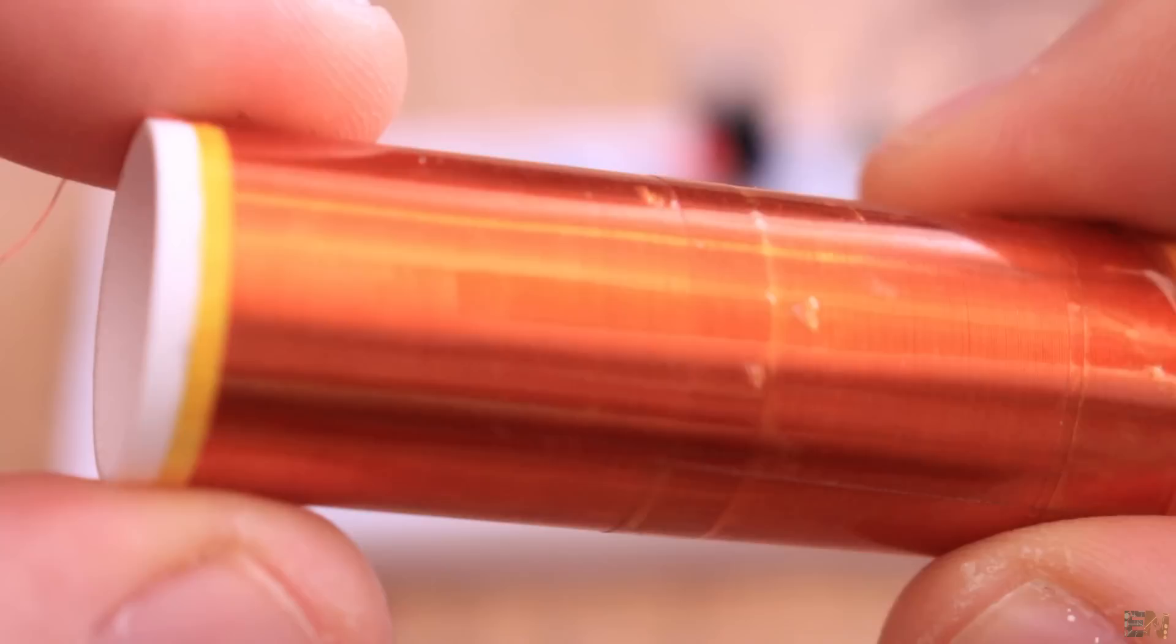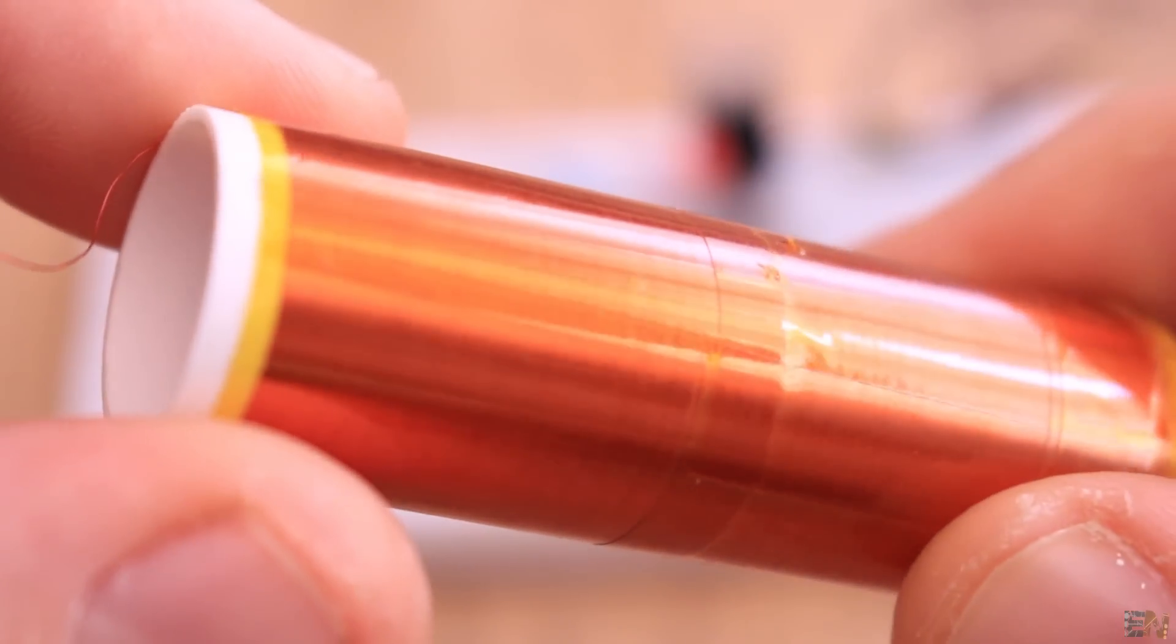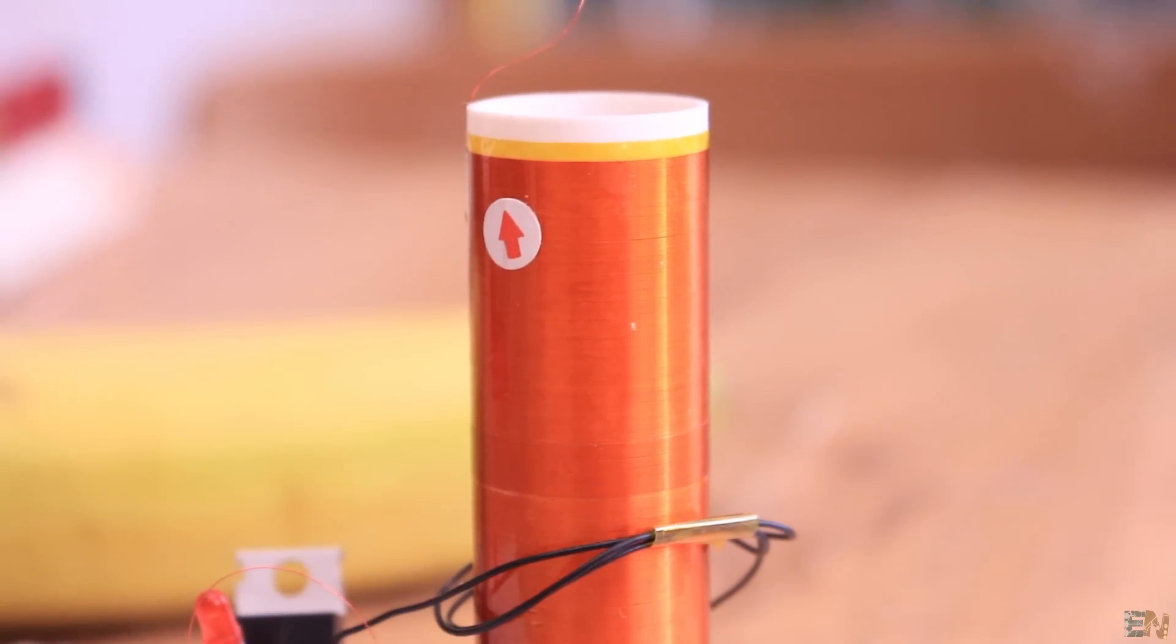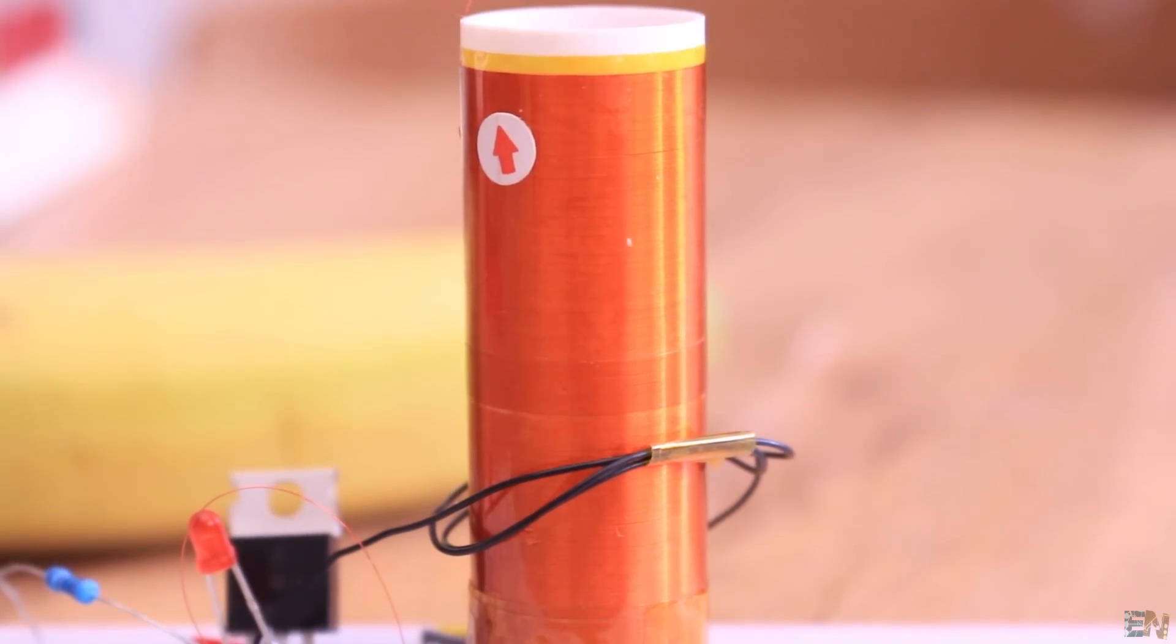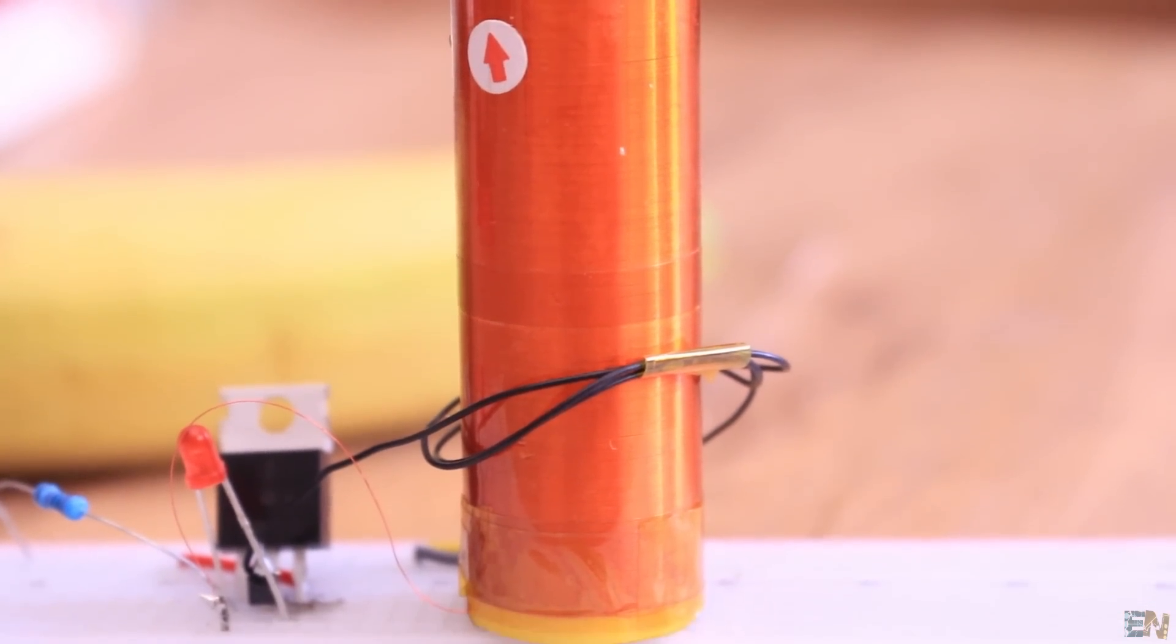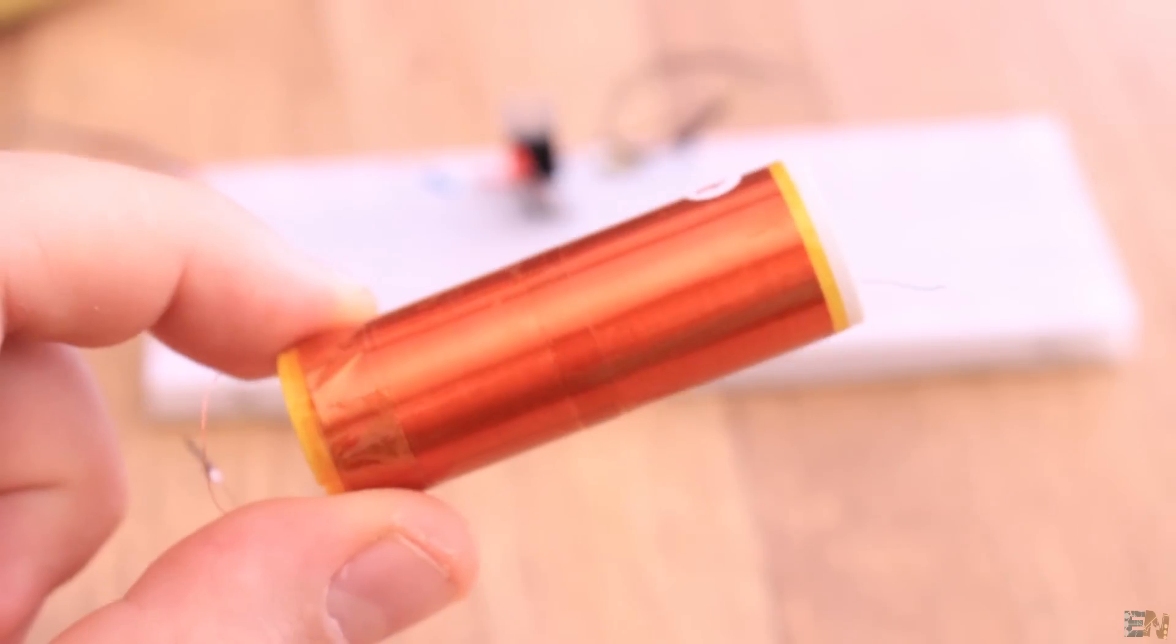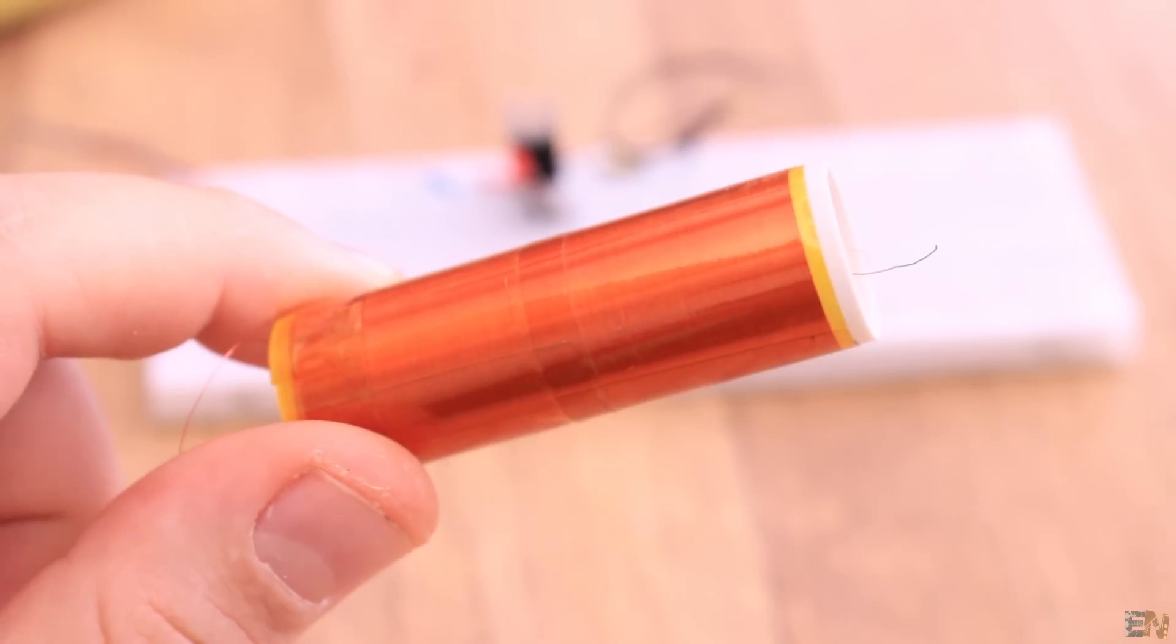The secondary coil must have only one layer of windings. Otherwise, there will be a voltage drop between one layer and the other and voltage arcs could jump between the windings and we don't want that. Also, you might want to cover the windings with some plastic tape or maybe some resin in order to prevent voltage arcs between the windings of the secondary.